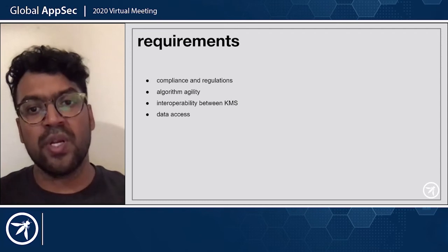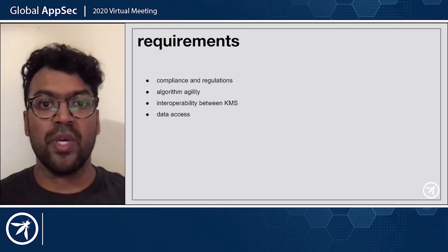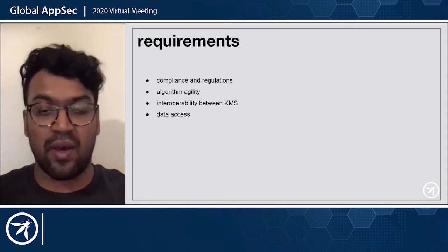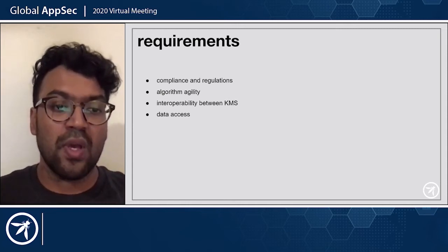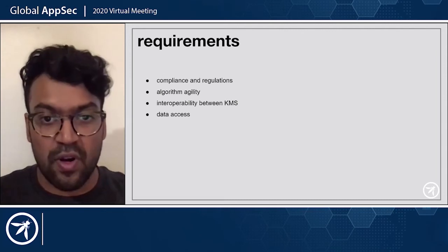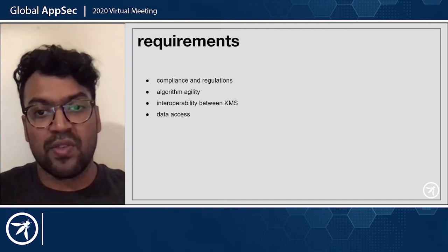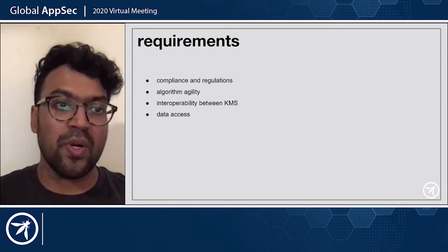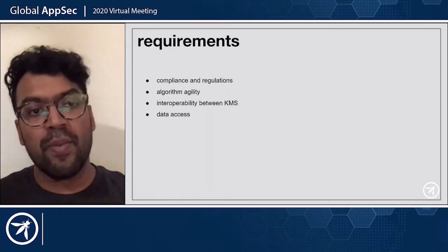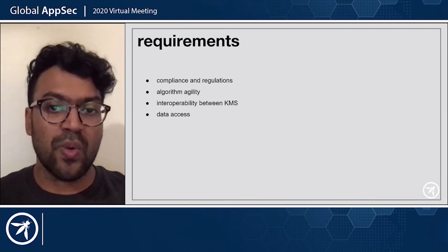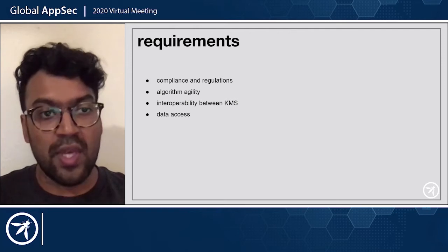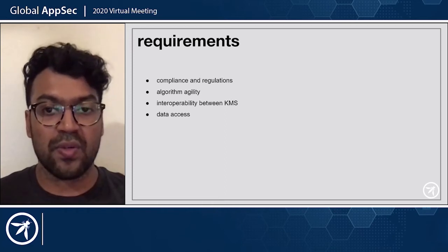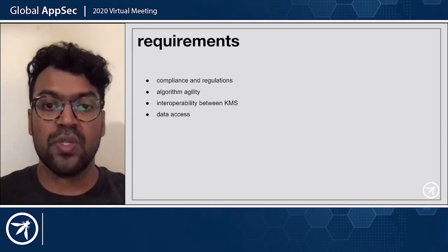So we talked about some goals and showed an example — now let's move to requirements. We handle sensitive data and have requirements from third parties, including compliance regulations. We all know PCI; some have heard about PSD2 and GDPR. Since we're handling sensitive data, we need to protect it in a certain manner, whether at rest or in transit. Another requirement is the agility notion we touched on — we have to have the ability to change the algorithm, key size, and different components without having to rework the entire application.